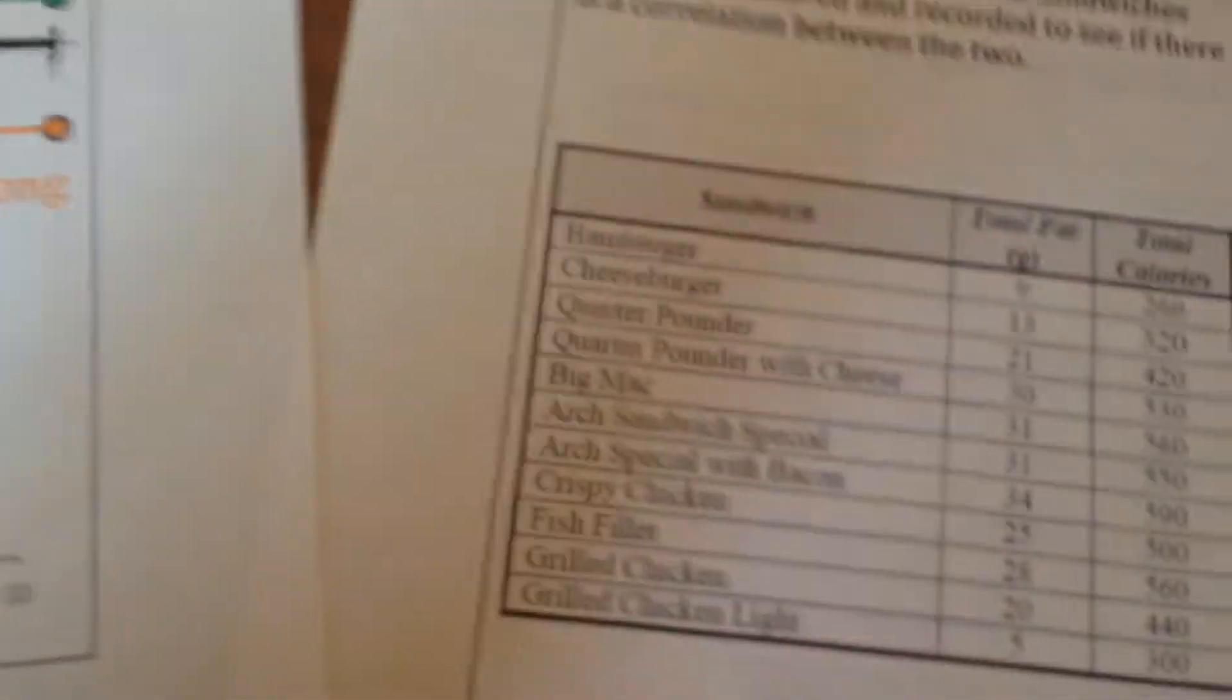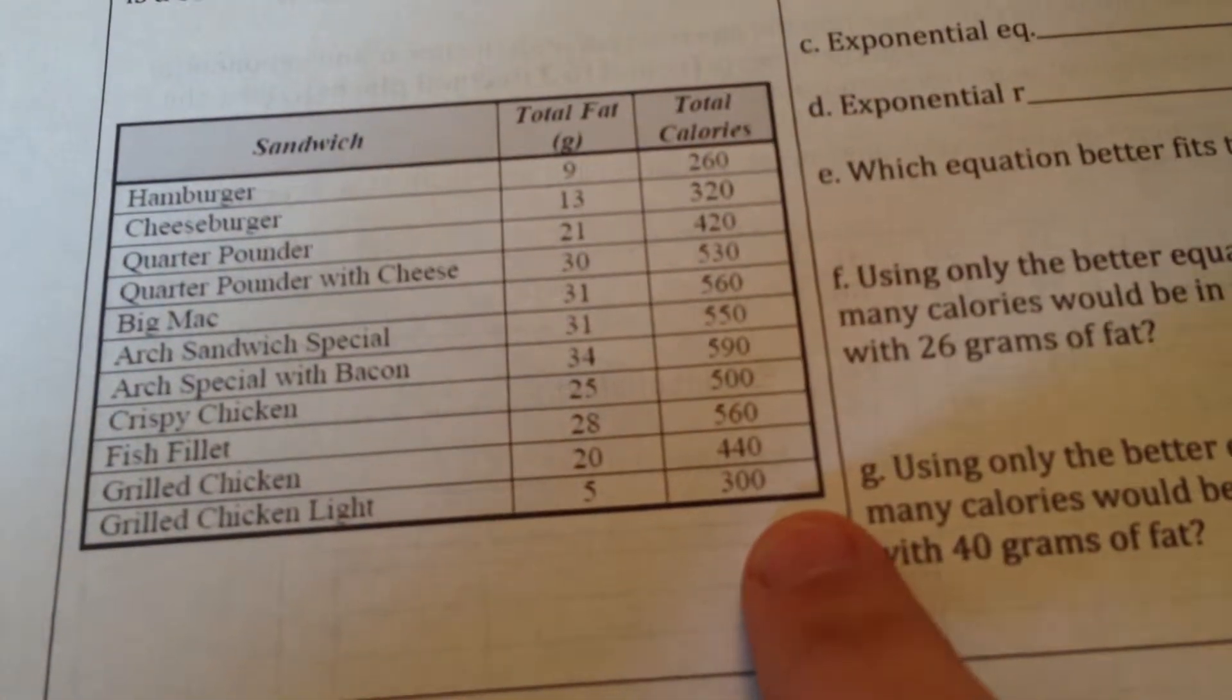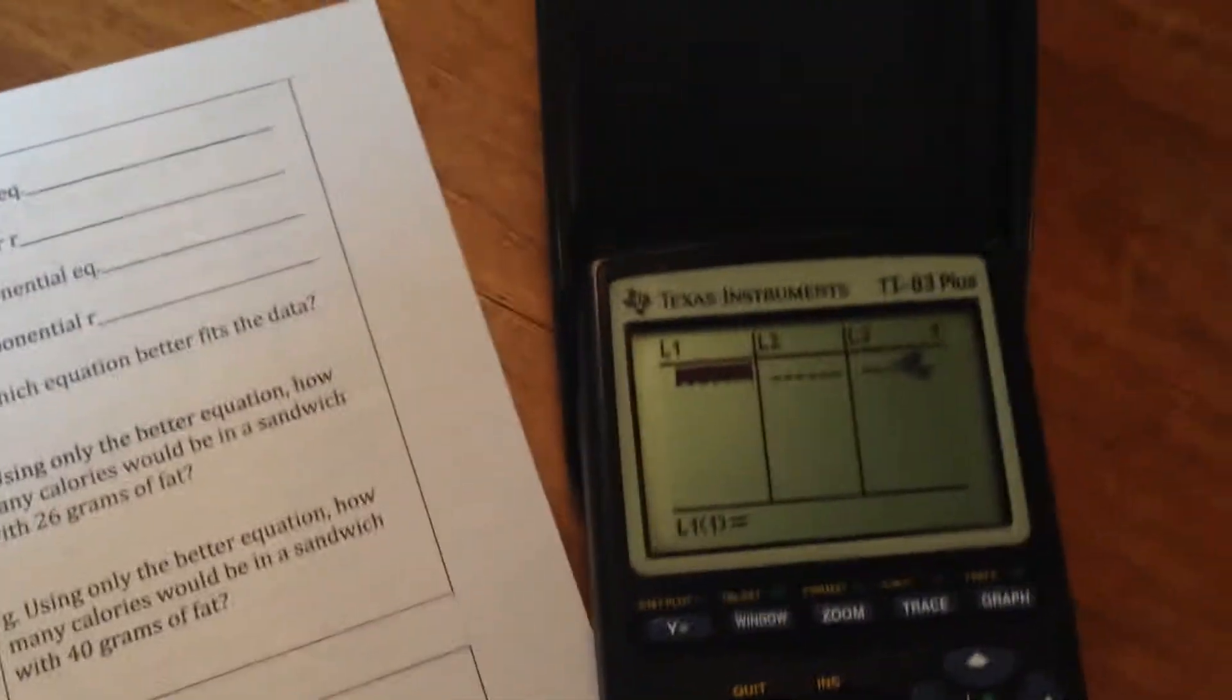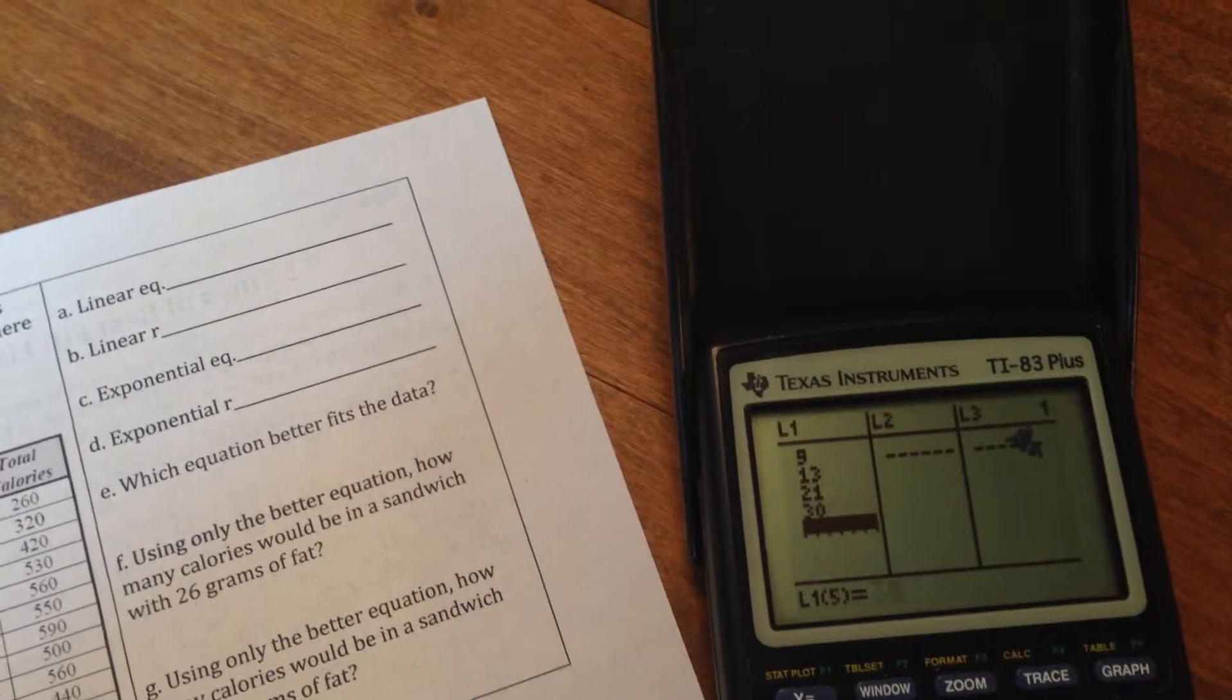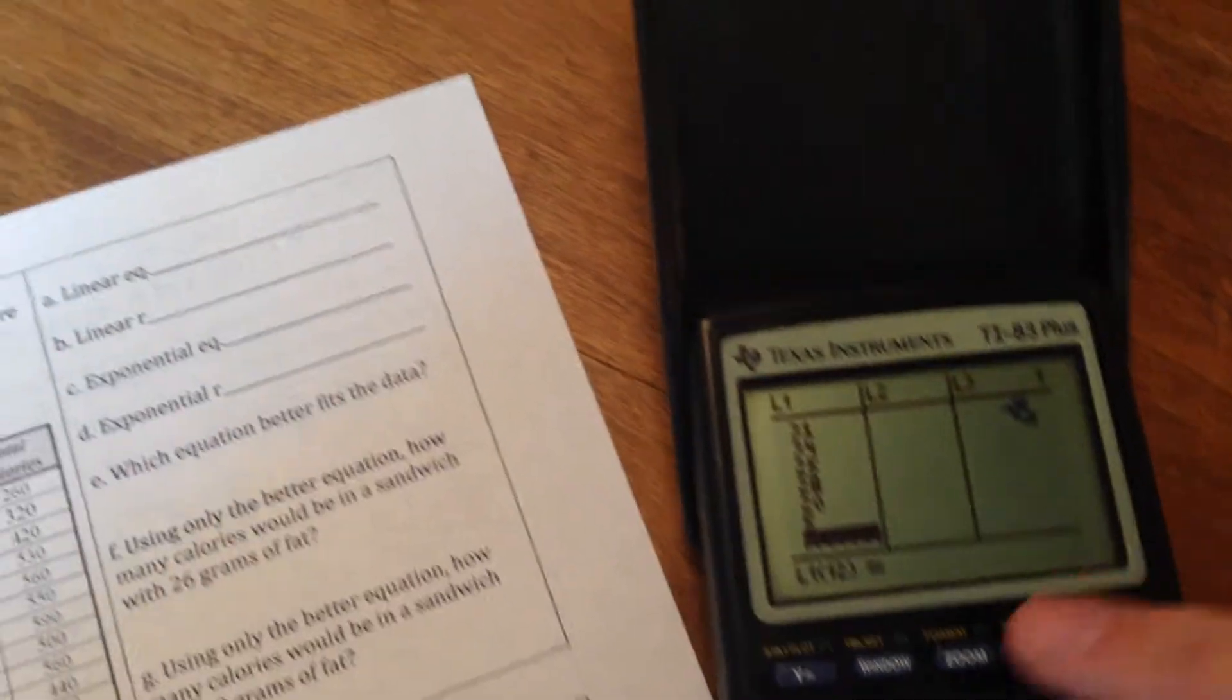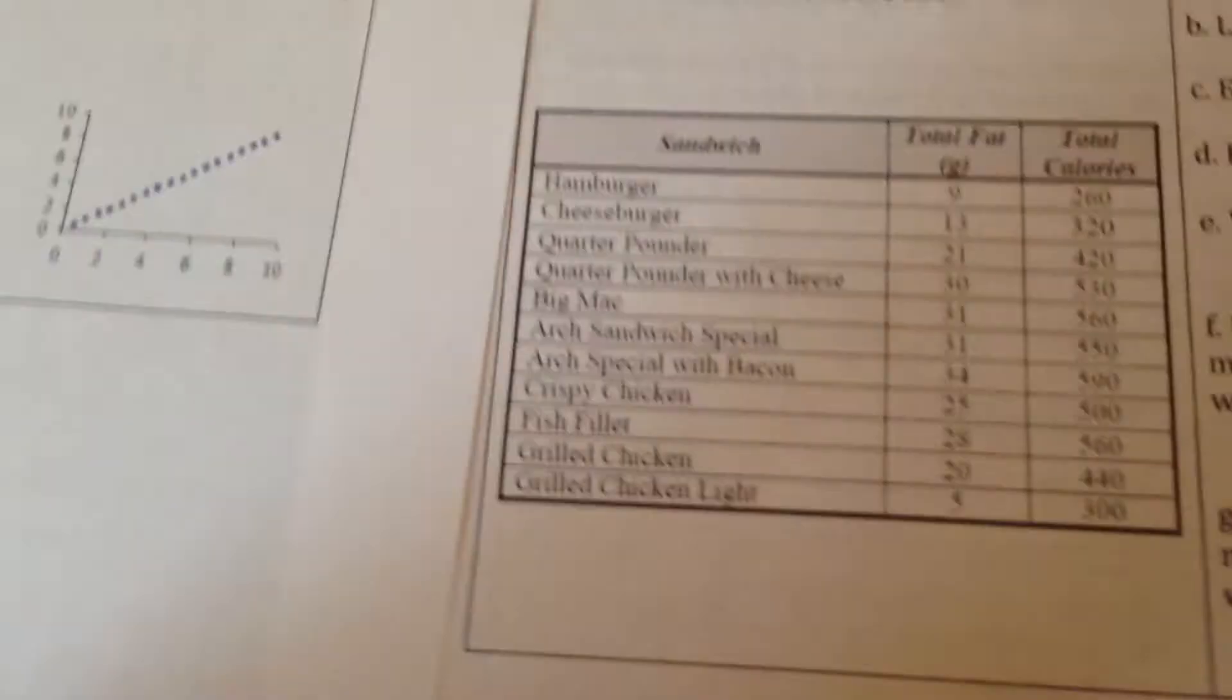So this equation, it looks like it came off of the Big Mac menu, or the McDonald's menu. It's going to list a bunch of their different sandwiches, how much total fat that they have, and how many calories they have. So I'm going to just type in this list as quickly as I can using my one hand. This is going to be my L1 list. This is going to be my L2 list. So here we go. We've got 9, 13, 21, 30, 31, 31, 34, 25, 28, 20, and then 5. Now we can double count. This is asking us for a 12th number, which means we have typed in 11 numbers into our list. The 11th number was 5. So if we come over here, let's just double count. Make sure we've got them all. 1, 2, 3, 4, 5, 6, 7, 8, 9, 10, 11. Perfect.